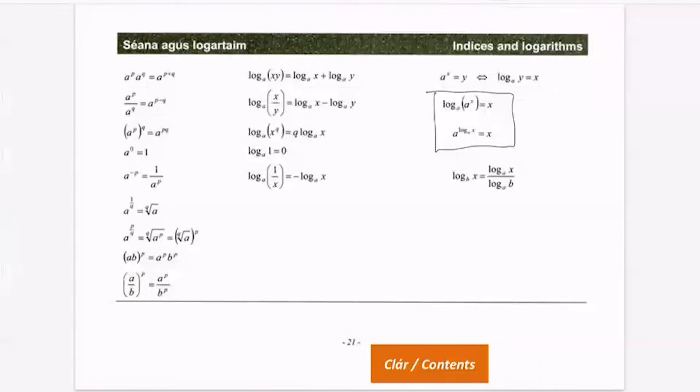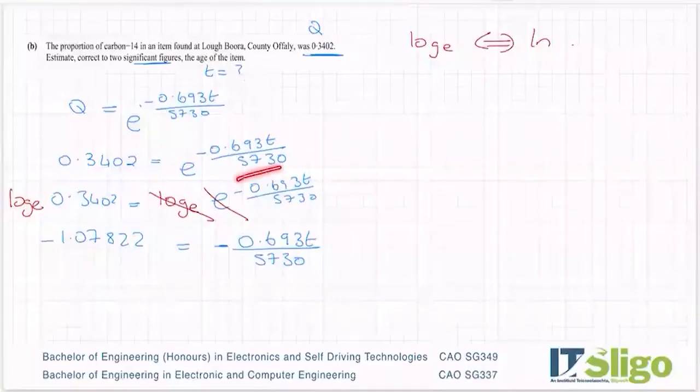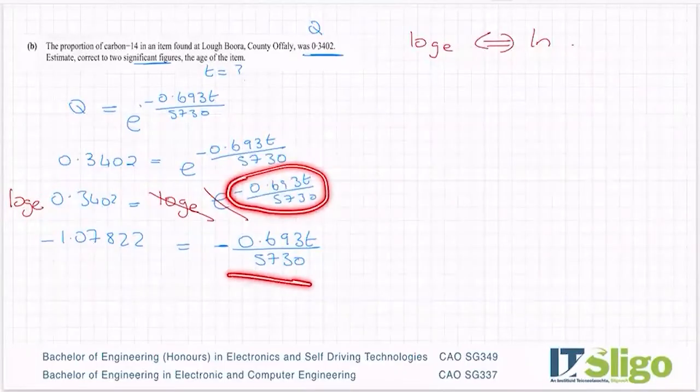And that's equal to minus 0.693t over 5730. If I go back to this rule, when you cancel a and log to the base a, your answer is whatever was originally in the power. So this was originally in the power, which therefore the right hand side becomes equal to that.